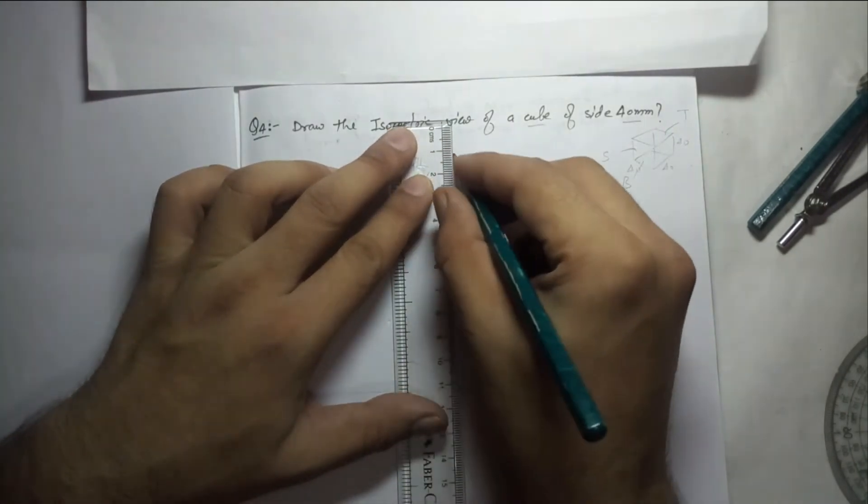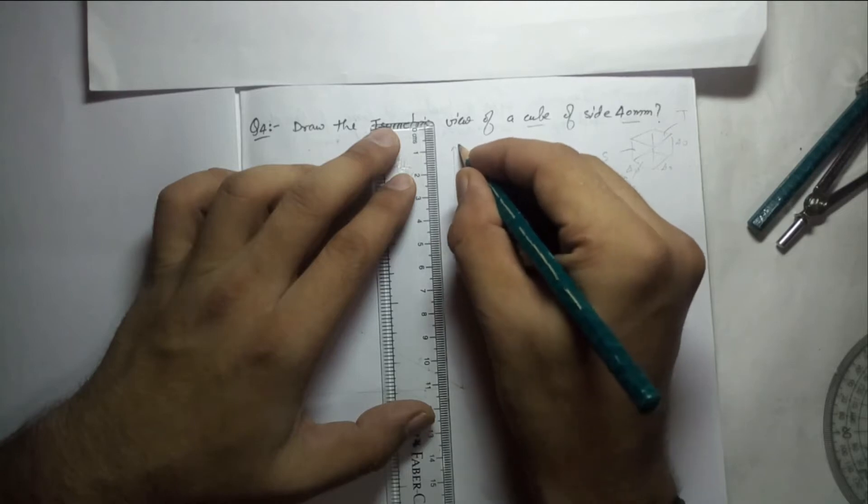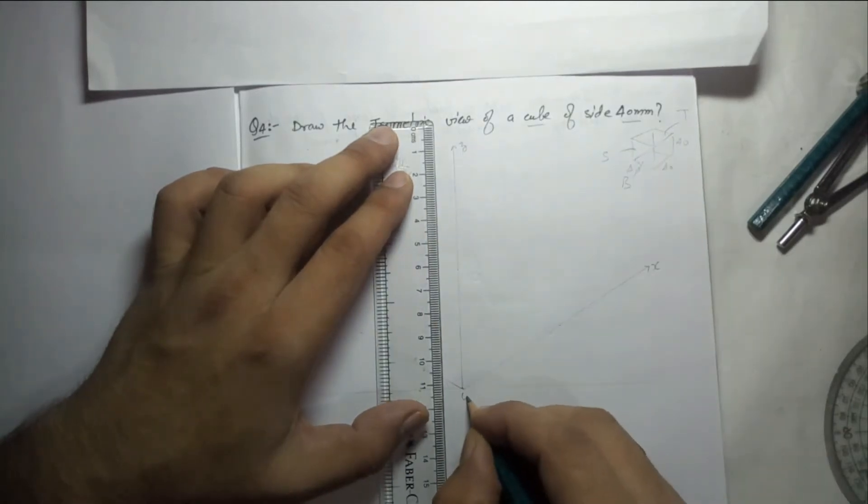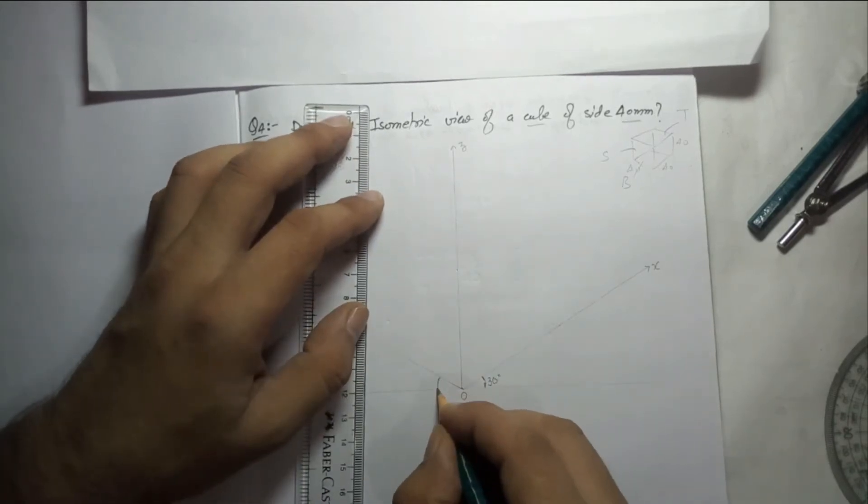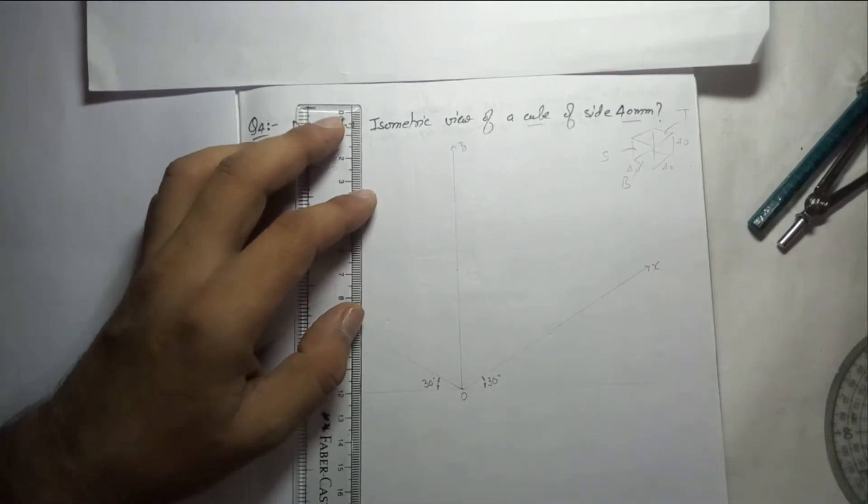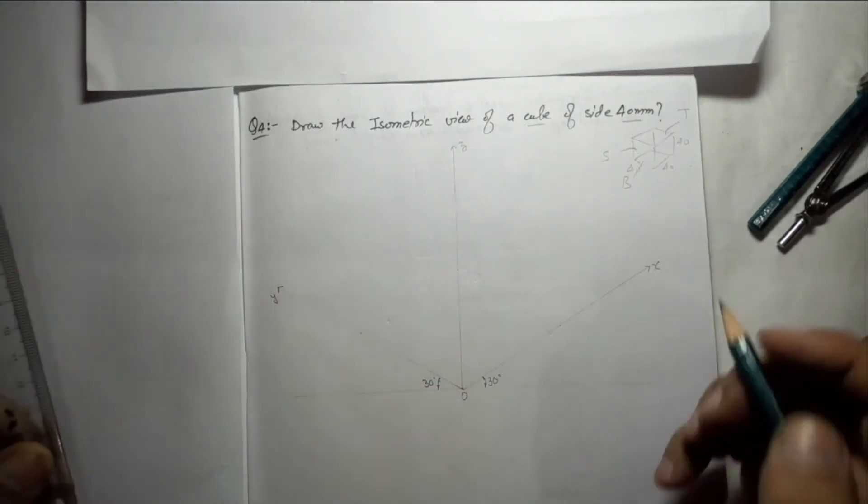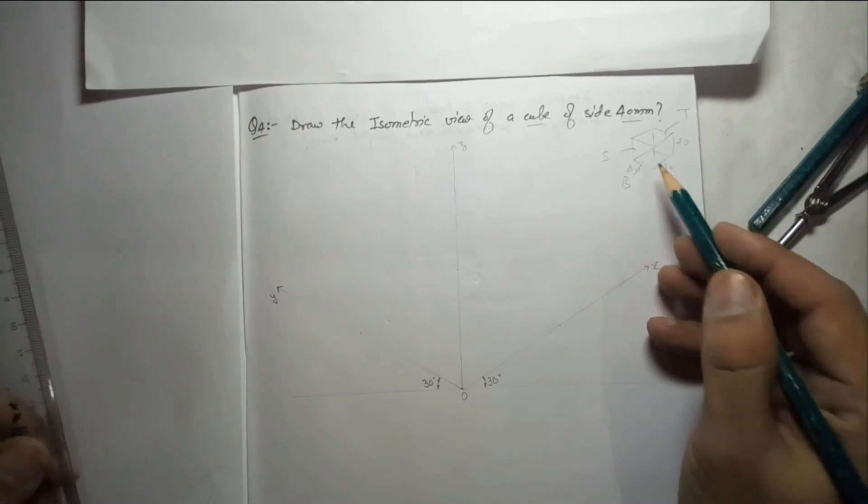This is known as isometric axis. They can ask you the question separately for this also. This is the point O, this angle is standard 30 degrees. In theory I have explained everything, why this angle is 30 degrees. Now the base of this cube is 40 by 40.